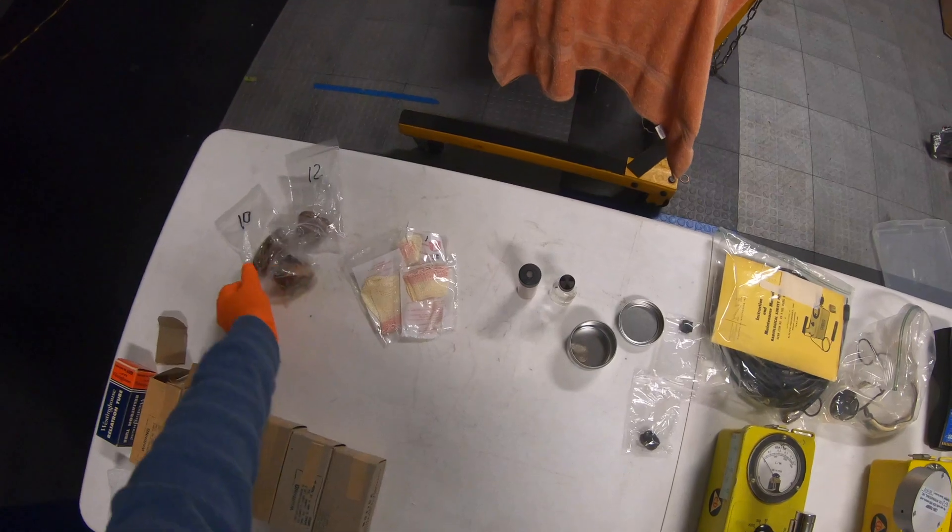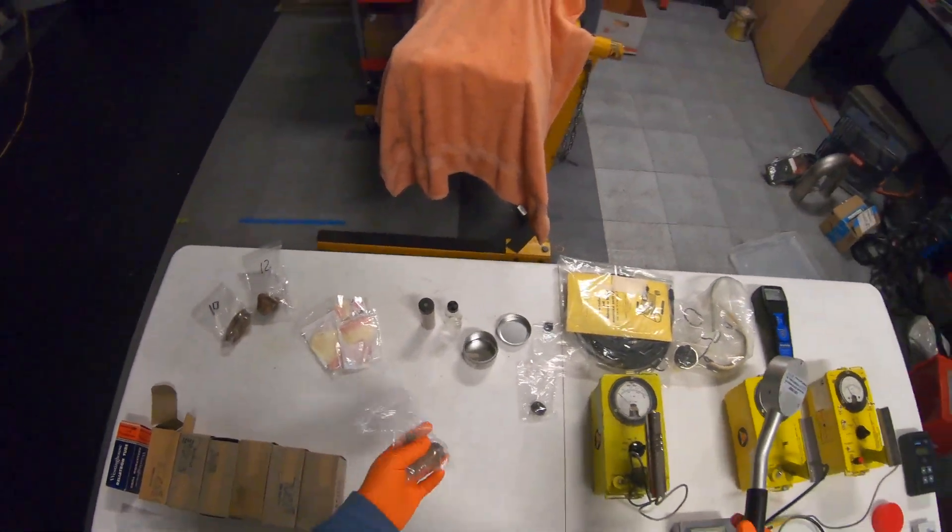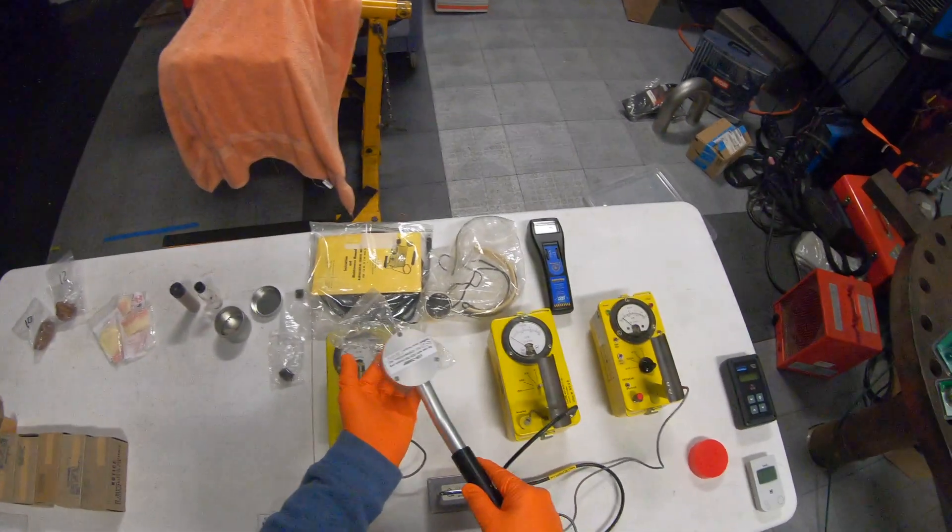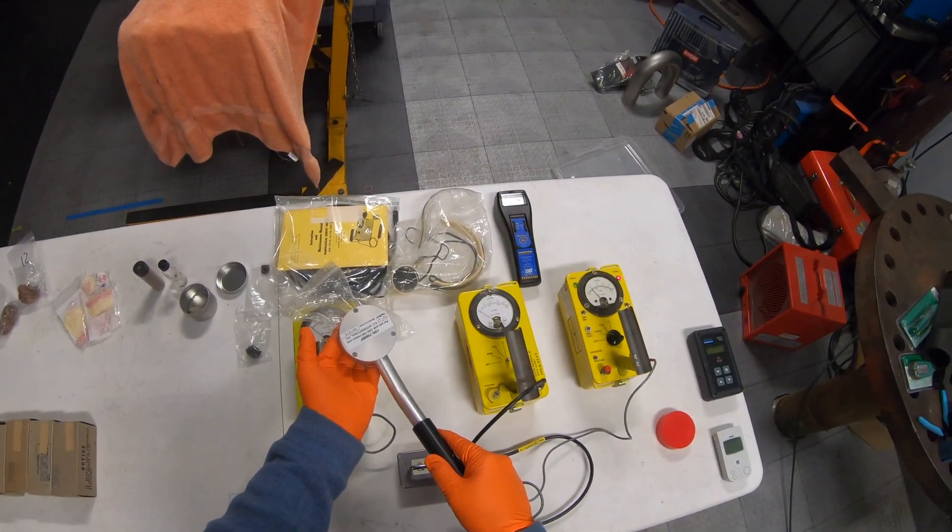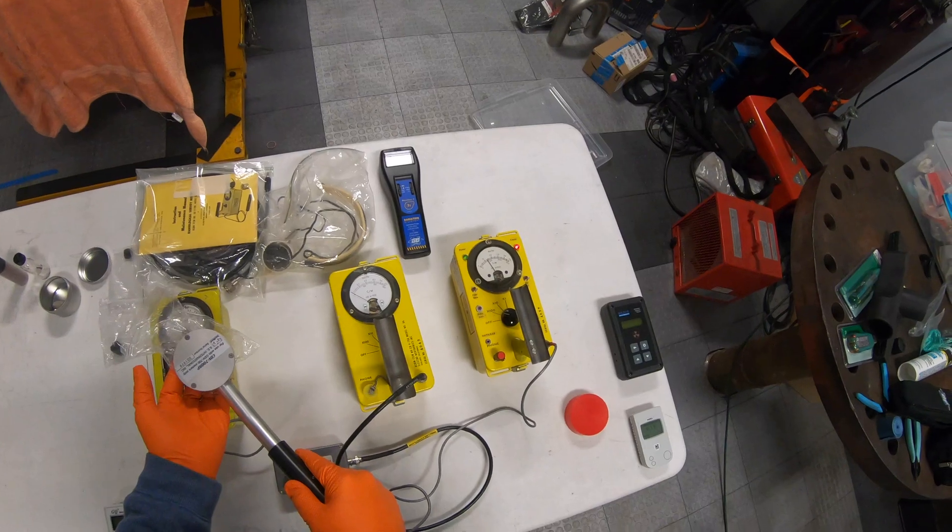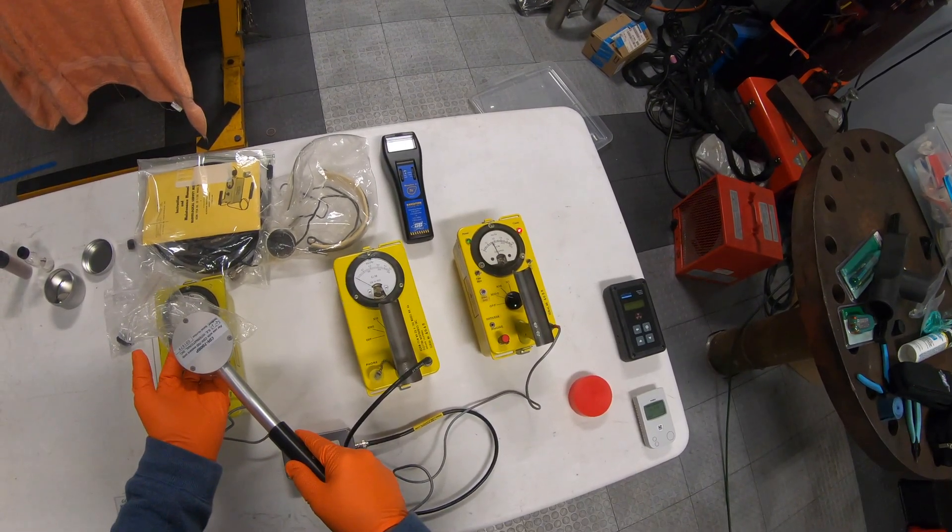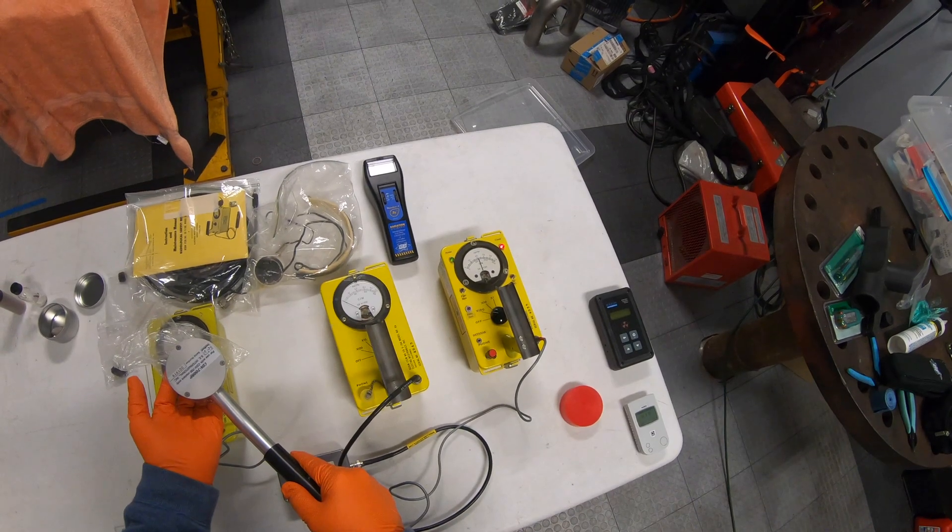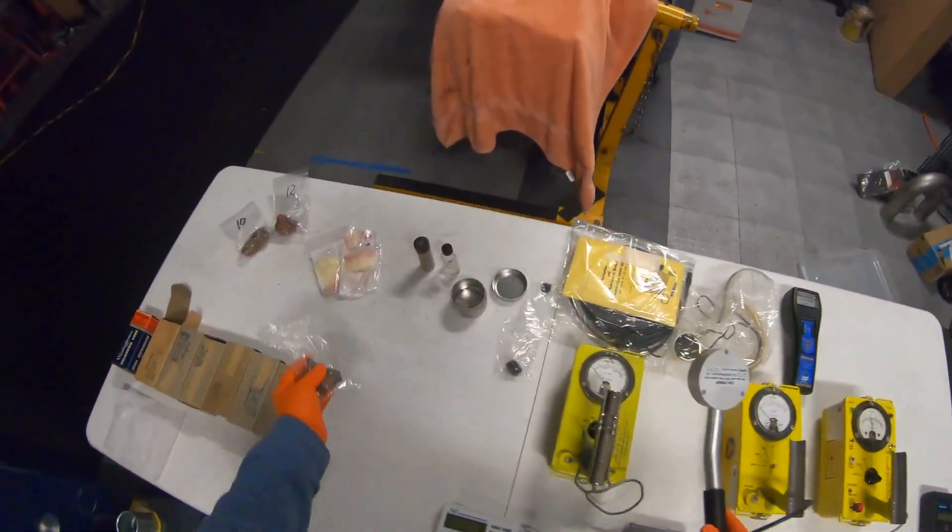And they have some large pieces of ore that have some thorium in them. These guys are around, what, 10,000? 10,000, 12,000. These are all pretty similar.